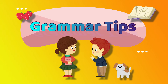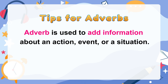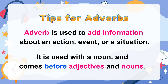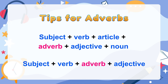Grammar Tips. We will look at tips for adverbs. An adverb is used to add information about an action, event, or a situation. It's used with a noun and comes before adjectives and nouns. The form is: Subject, verb, article, adverb, adjective, noun — or subject, verb, adverb, adjective.